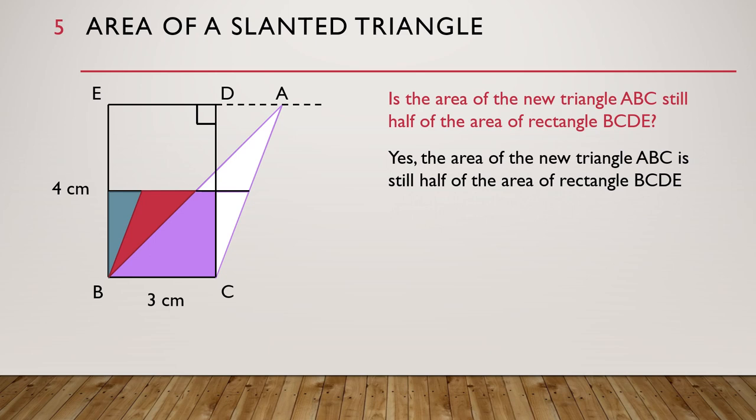So we can answer our question. Yes, the area of the new triangle ABC is still half of the area of rectangle BCDE. So the area of the new triangle ABC is still equal to half times 3 centimeters times 4 centimeters, which is still equal to 6 square centimeters.